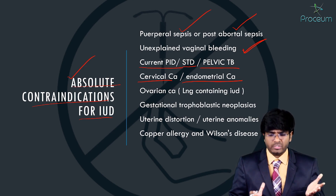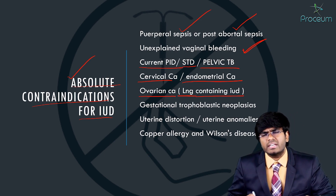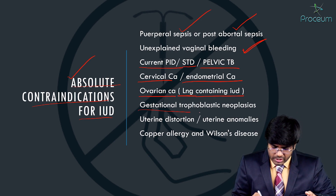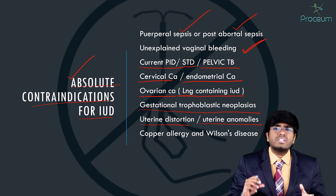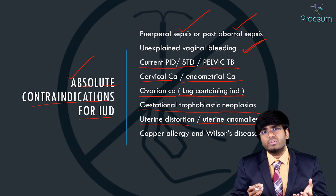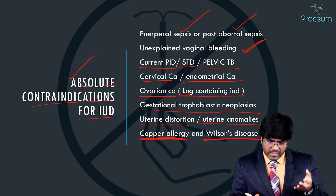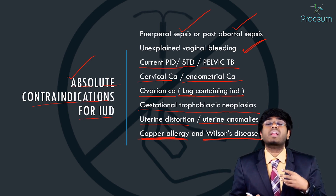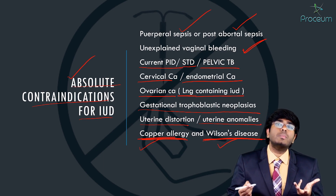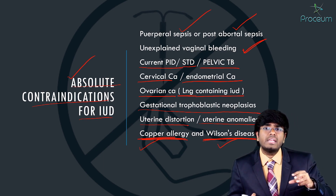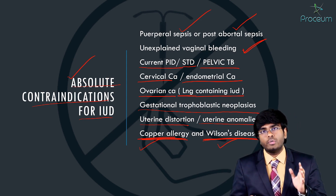If the patient has ovarian cancer, levonorgestrel-containing IUDs are not given. Also contraindicated: gestational trophoblastic neoplasia, uterine distortion or anomalies (risk of perforation or dislodgement), copper allergy, and Wilson's disease — because Wilson's disease involves excess copper accumulation, and copper IUDs release 50 micrograms of copper daily, which would be harmful.